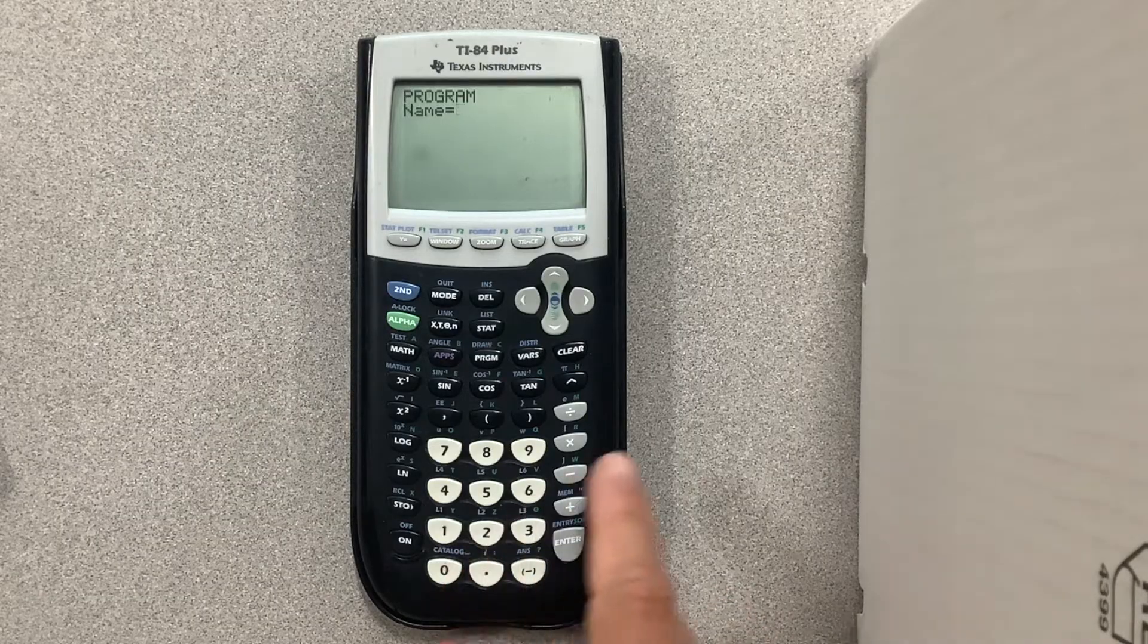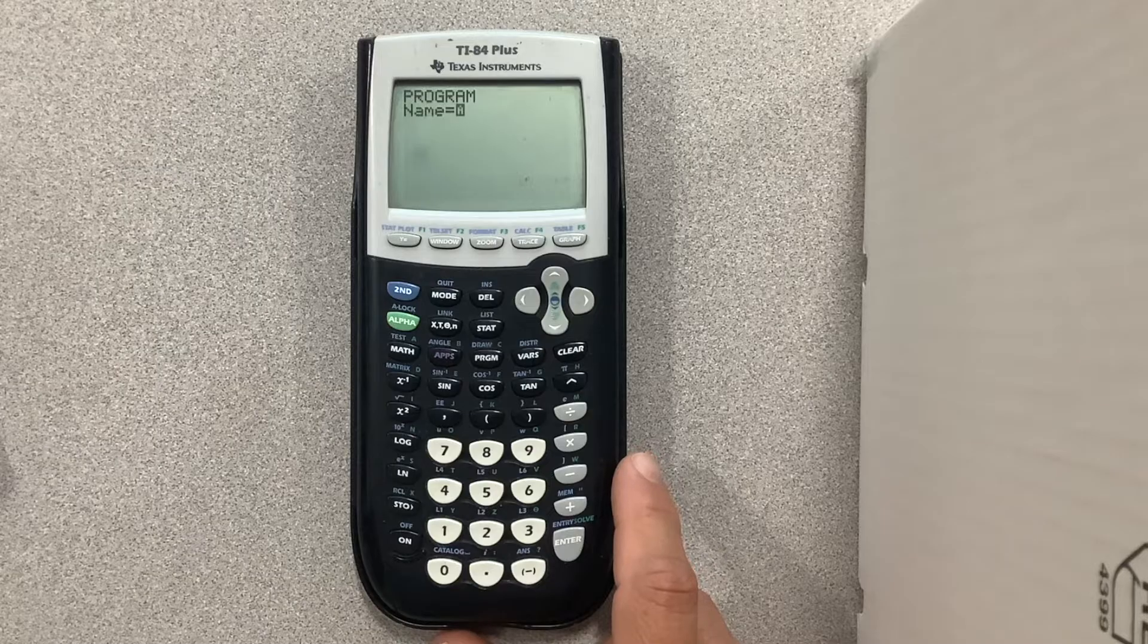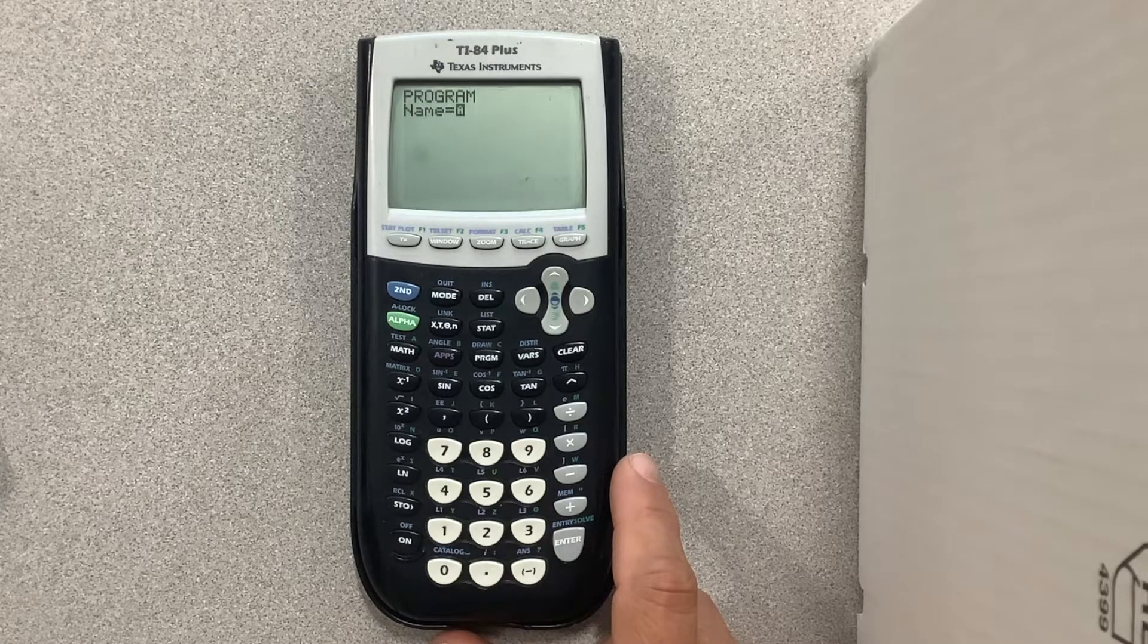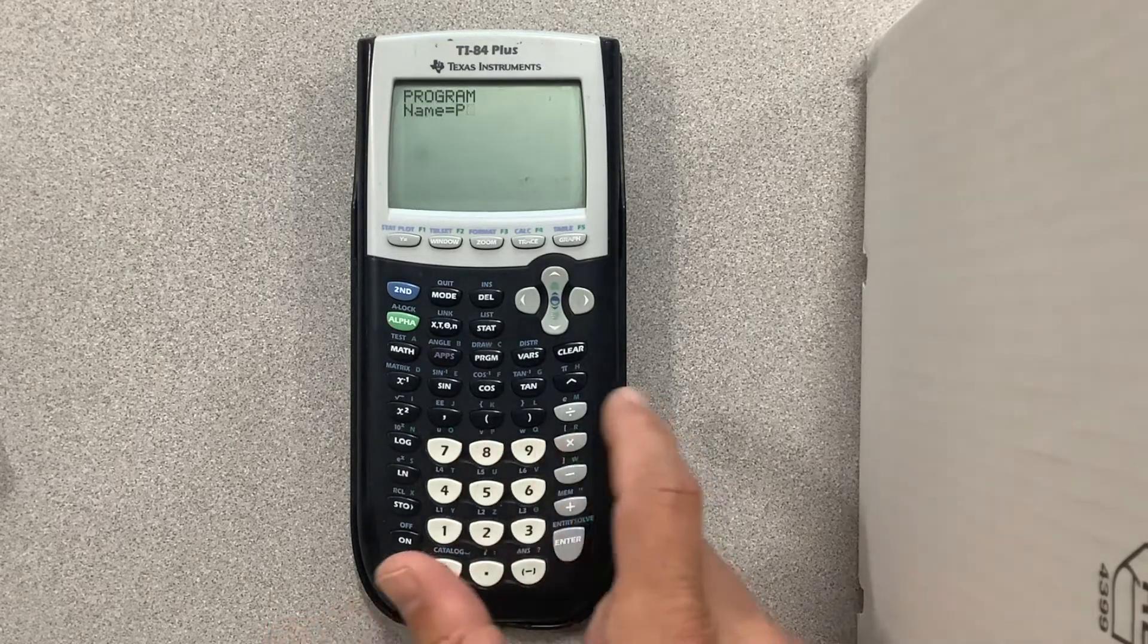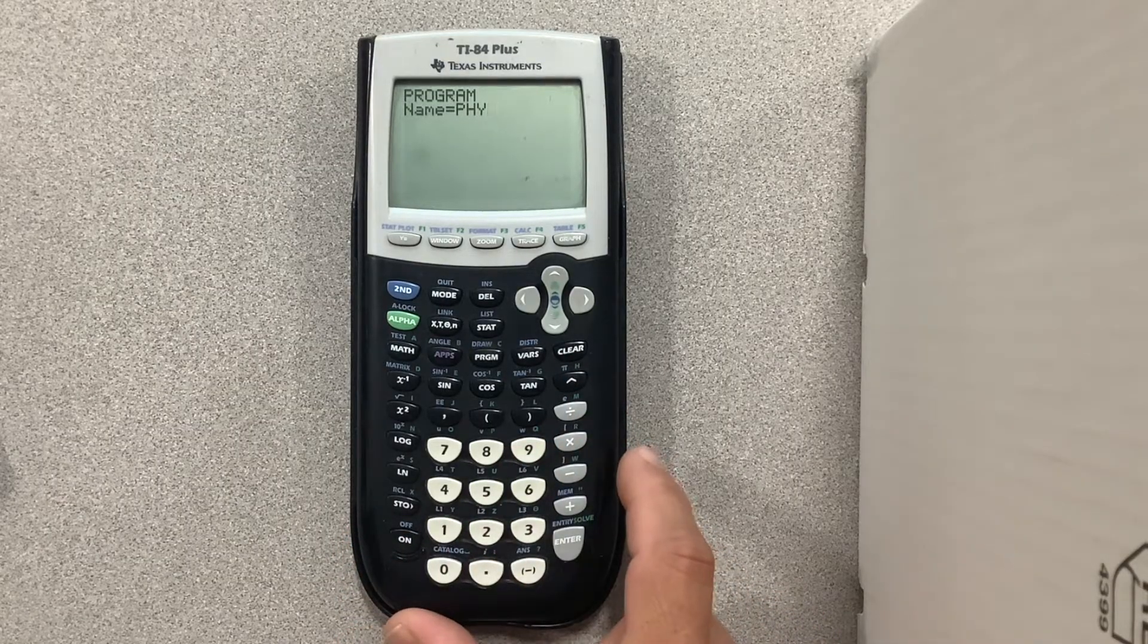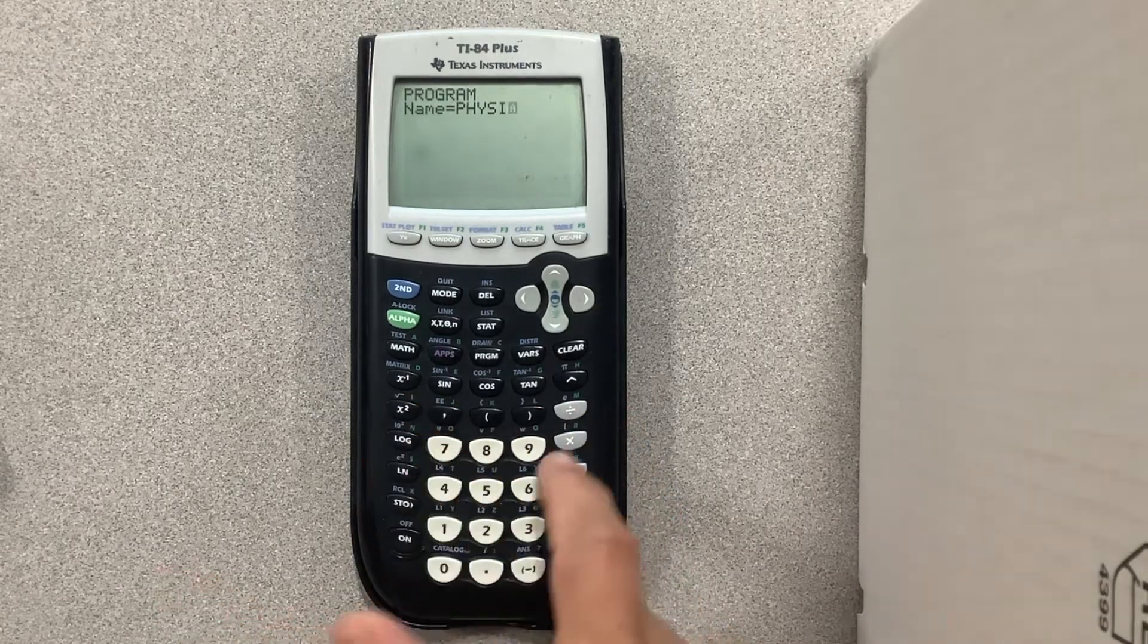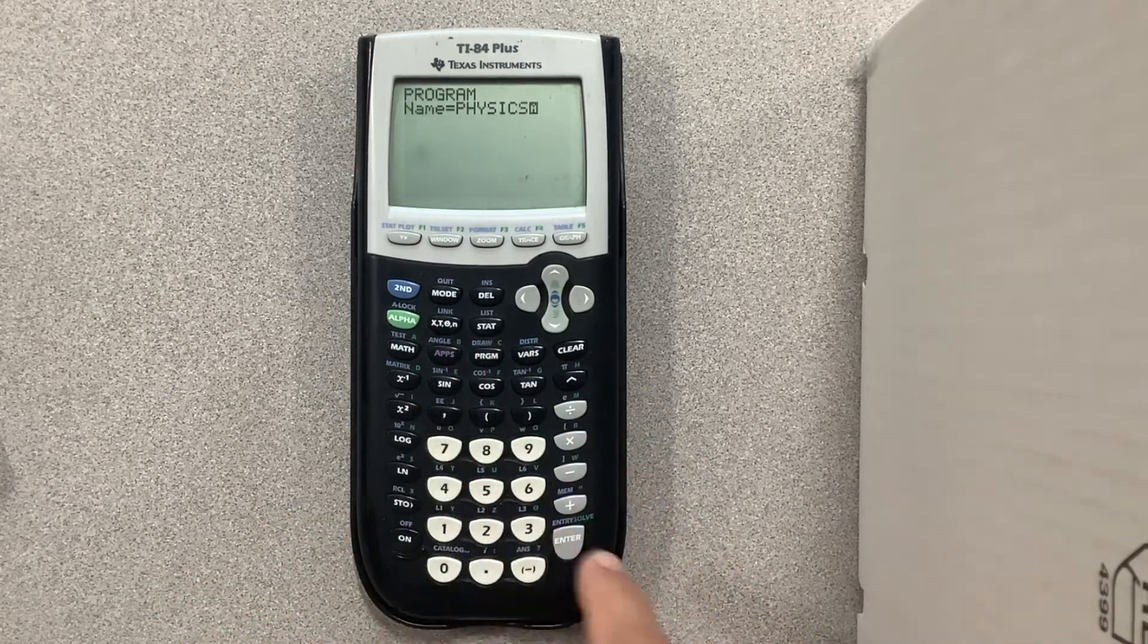Now name your program. The calculator is in alpha lock so you'll notice on the keypad there are green letters above various different buttons. So find the letters and give your file a name. I am typing out the word physics and then hit enter.